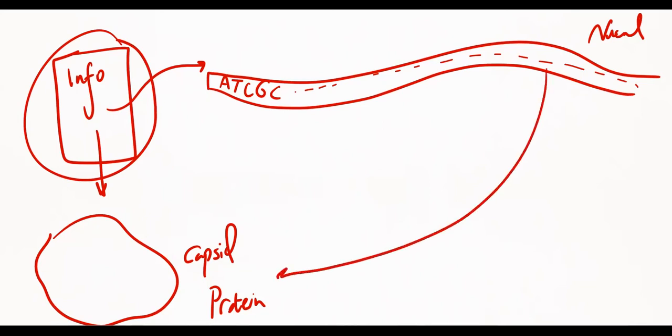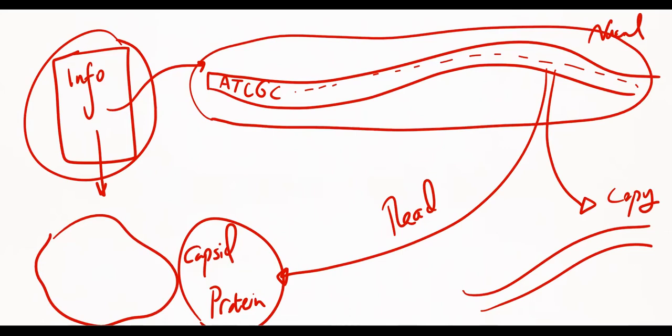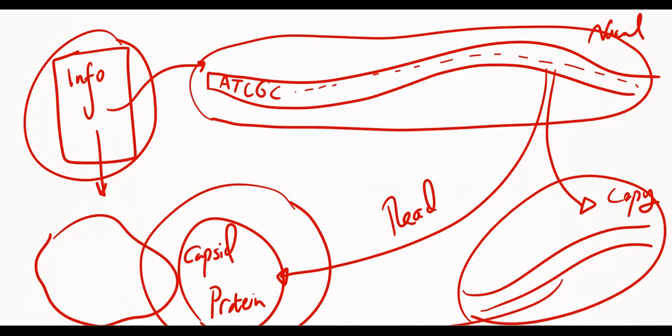Then this information can be read to create the capsid protein, and it also can be read to create a copy of that string. So the cell uses this instruction sheet to produce the protein shell of the virus and also to copy another instruction sheet to put it inside the virus. This is the purpose of nucleic acids of genetic material. They need to be read and they need to be copied.